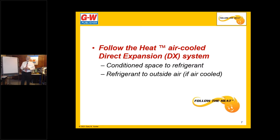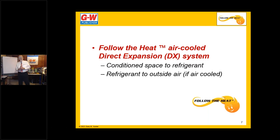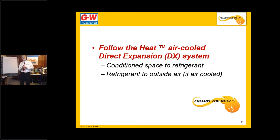If we think of something as simple as a window air conditioner, a split system, or a rooftop unit, there are only two steps in the heat transfer process. The heat goes from the conditioned space to the refrigerant — that happens at your evaporator. Then we take the refrigerant from the evaporator, carrying the heat from the conditioned space, pull it into the compressor, squeeze it, and send it out to the condenser. From the condenser, it goes out to the outside air. With a window air conditioner, a rooftop unit, or a split system — anything that's air to refrigerant heat transfer — there are just two steps.